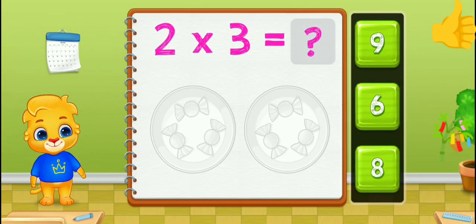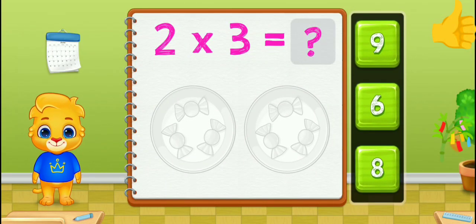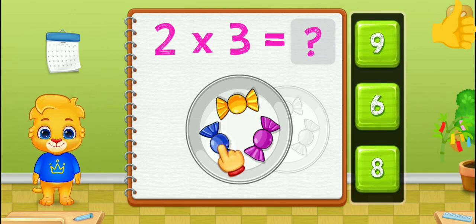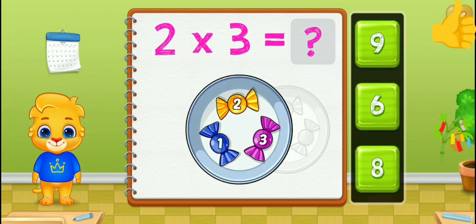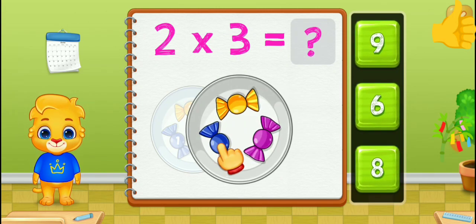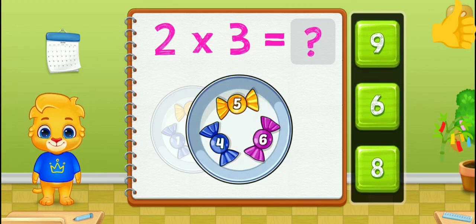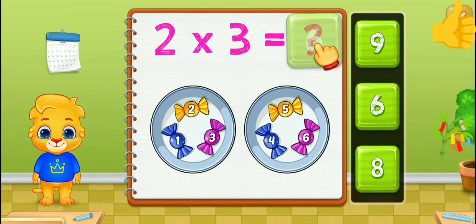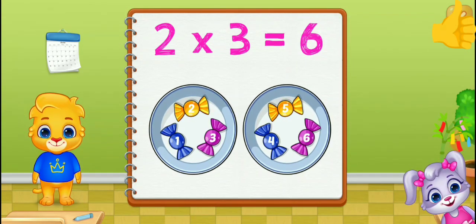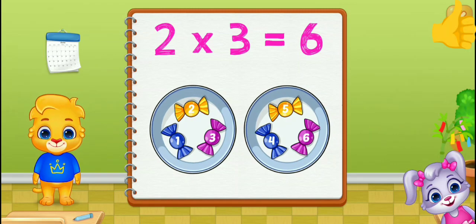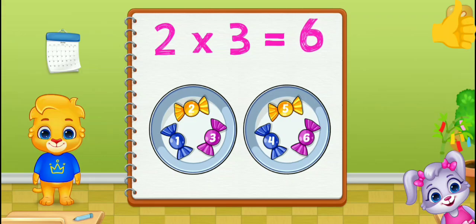Let's learn to multiply using groups. One, two, three, four, five, six. When you multiply, you are adding numbers in groups. Two times three equals six.